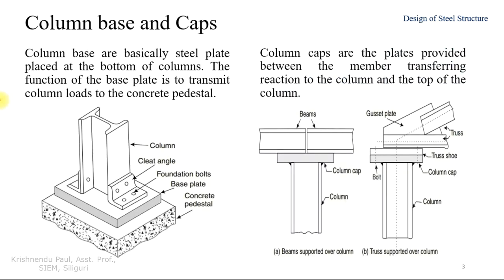Column bases are basically steel plates placed at the bottom of the column. The function of the base plate is to transmit the column load to the concrete pedestal. As shown in the figure, there is a column, and at its bottom there is a steel plate called the base plate or column base. Below that is a concrete pedestal supported on the soil. The load transfers from the superstructure through the column, to the base plate, to the concrete pedestal, and then to the soil.